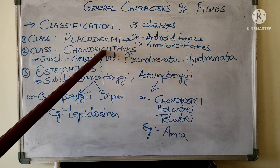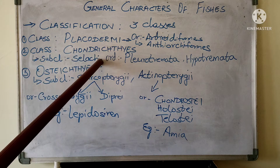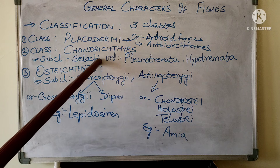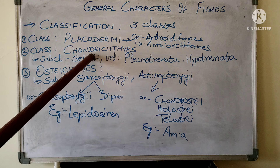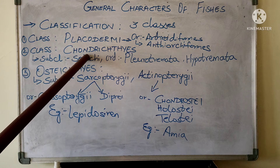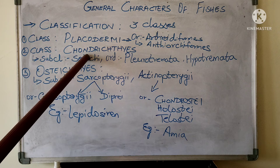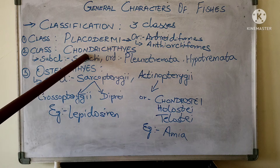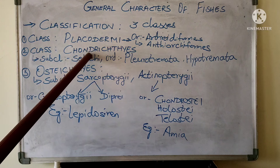The next class is Chondrichthyes. These are cartilaginous fishes — the skeleton is made up of cartilage. The body is spindle shaped or streamlined. The tail fin is heterocercal, meaning both lobes of the tail fin are not equal: one is a little longer and the other a little shorter. Five to seven pairs of gills help in respiration.